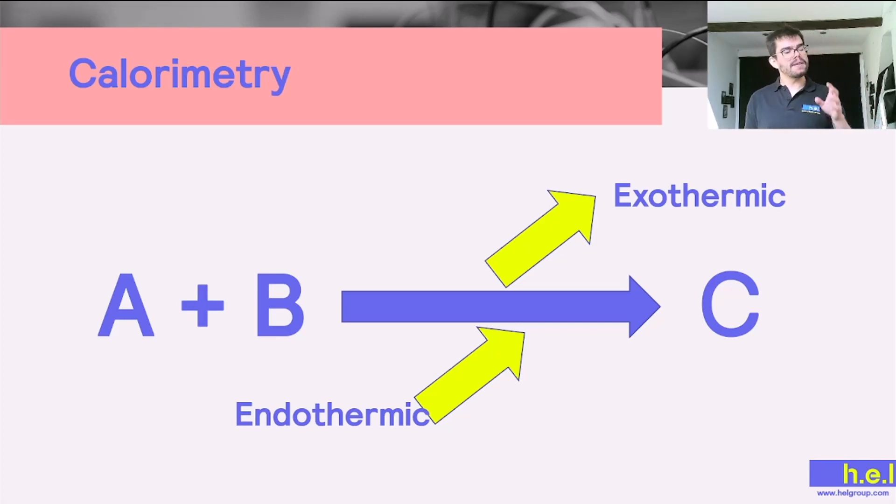On the other hand, it can be the case that A and B when they react, they're going to be generating energy and this energy is going to be transferred to the surroundings in what we call an exothermic reaction, and this is the type of chemical reaction we're going to be focusing on because it can have some risks associated with it.